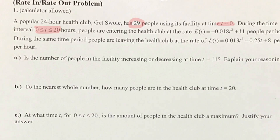It might be 8 in the morning or 4 in the morning — we have no idea — but whenever they started keeping track, there were 29 people there. E is for entering and L is for leaving. We have two functions that tell you how many people are coming in and going out. So number one asks: is the number of people increasing or decreasing?